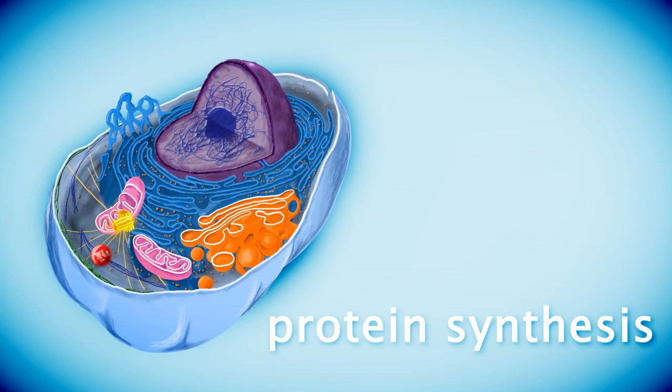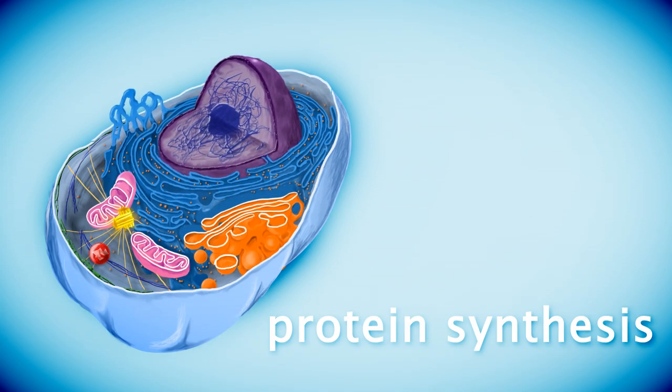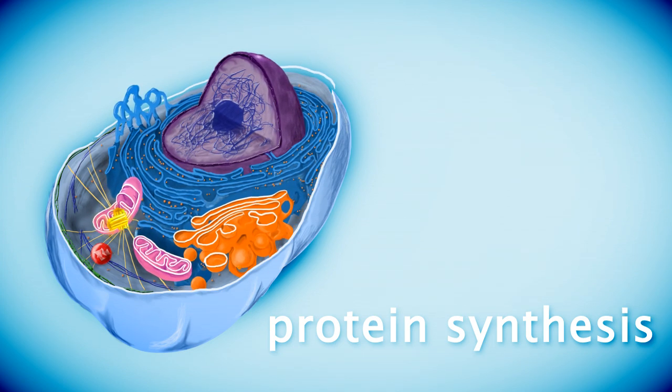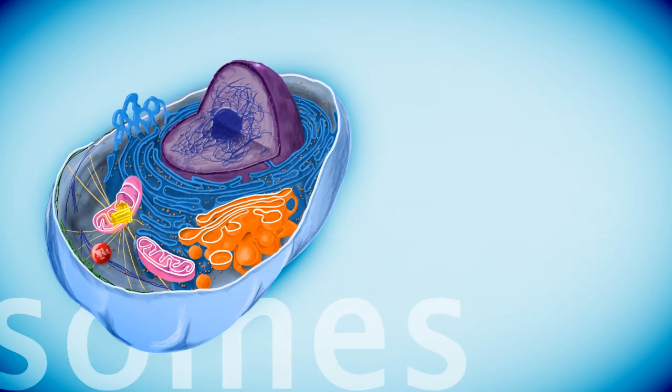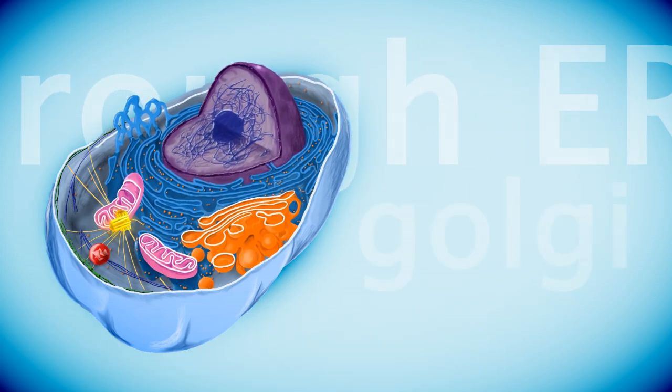Animal cells produce proteins that play a critical role in performing the cell's specific functions. The process of synthesizing proteins requires the nucleus, free and bound ribosomes, rough endoplasmic reticulum, and the Golgi apparatus.